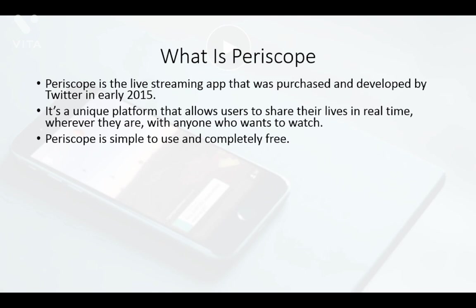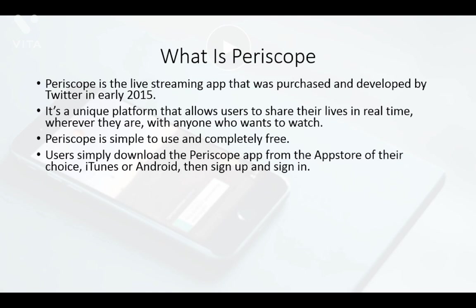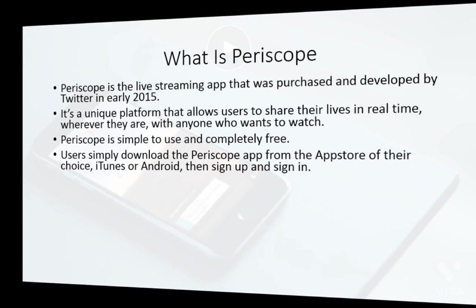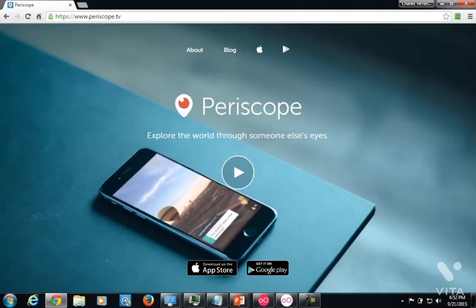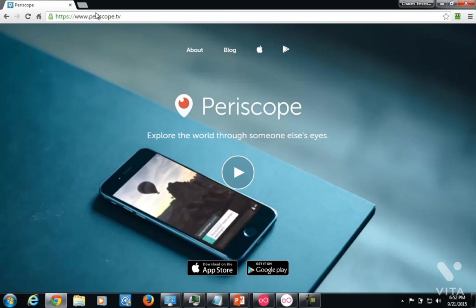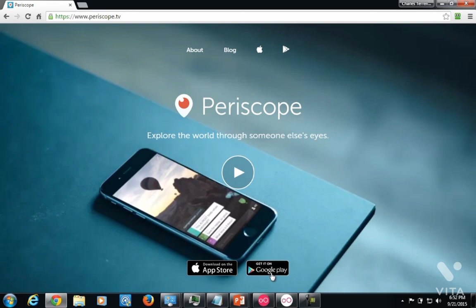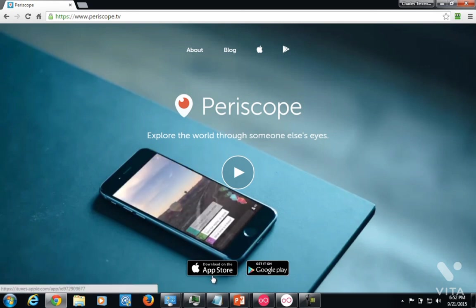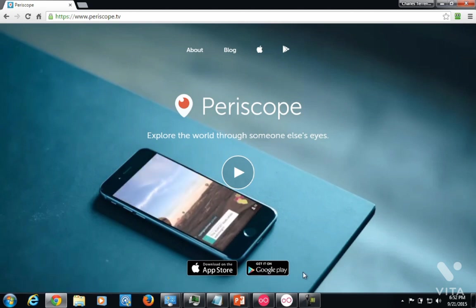In order to get started, all the user has to do is download the Periscope app from the App Store of their choice. The application is not available for Windows Phone — it's only available for iTunes or Android. For the most part, Periscope is not easily used on a desktop computer. Even if you go to periscope.tv, the only way to really interact is to download the app from the App Store or Google Play.